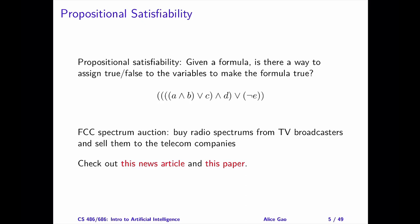One application of this problem is the FCC spectrum auction. The purpose of the FCC spectrum auction is to buy back radio spectrums from TV broadcasters and sell them to the telecom companies — the companies who provide services for our phones.